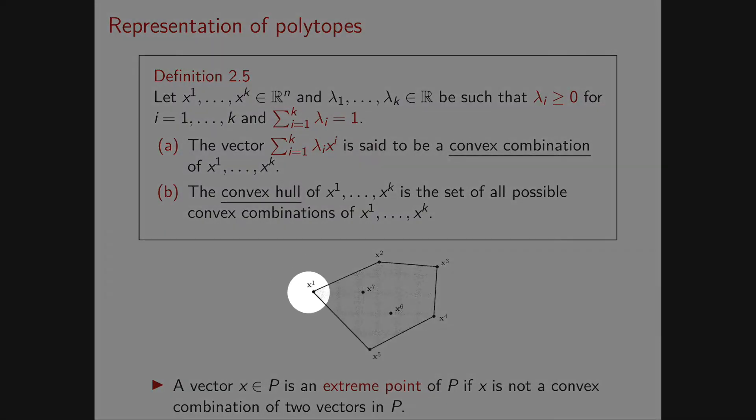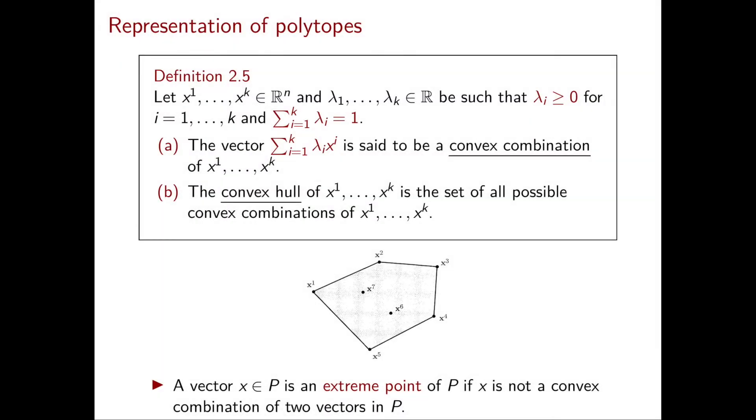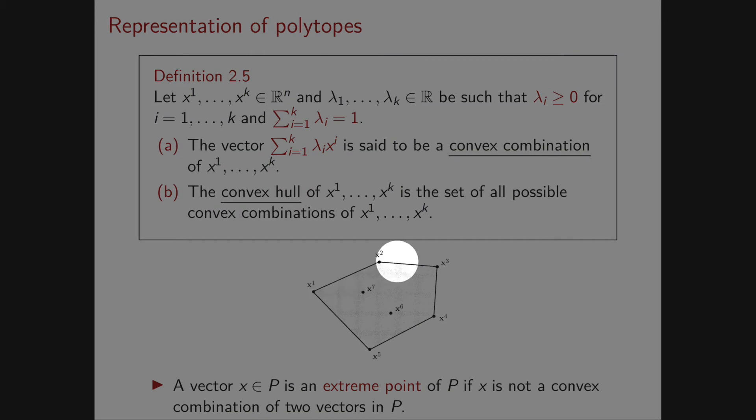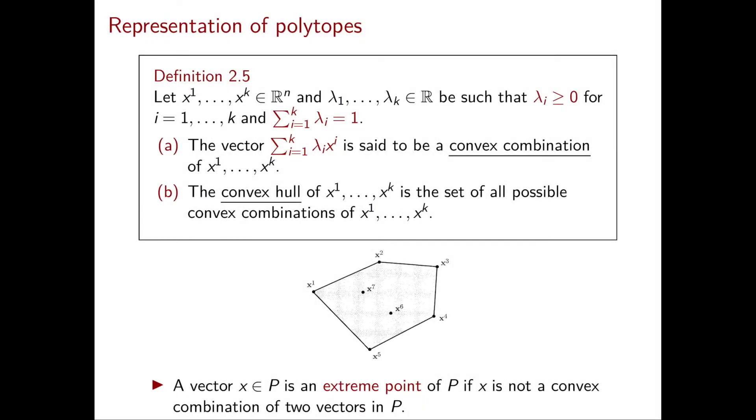If you have only two vectors x^1 and x^2, the convex hull of x^1 and x^2 is exactly the segment joining them. If you consider all seven vectors in this picture, then the convex hull you obtain is this pentagon, which is the smallest convex set containing all these points.